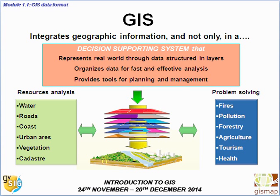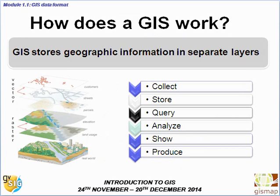We can analyze problems with water, roads, coastline, urban areas, vegetation and cadastre to solve problems like fire monitoring, pollution, forest management, agriculture, tourism and health. A GIS works by collecting data from different sources, storing it in a proper way, querying and analyzing it, and finally showing and producing reports, maps and web GIS.